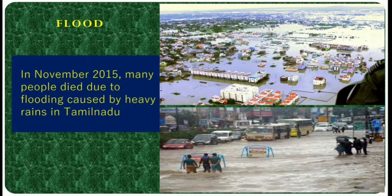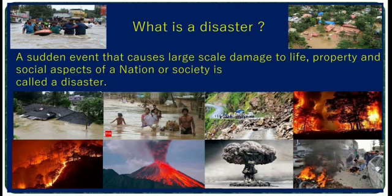Now we have seen the pictures of earthquake, flood, landslide, etc. All these are disasters. Children, now let's see what is a disaster. A sudden event that causes large-scale damage to life, property and social aspects of a nation or society is called a disaster.